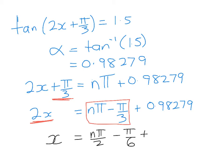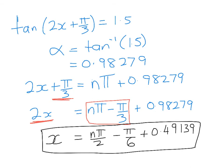So nπ on 2 minus π on 6 plus that number divided by 2. I'm going to try and do that in my head. This will be interesting. This is probably not going to be quite right. So 0.49139. I think that's right. I'm sure one of you will email me and tell me that I'm wrong if it is, but that is my general solution for the equation that we started out with.